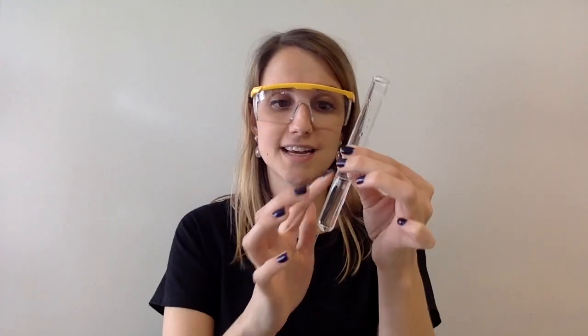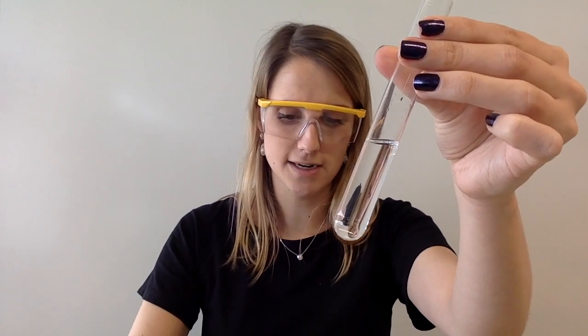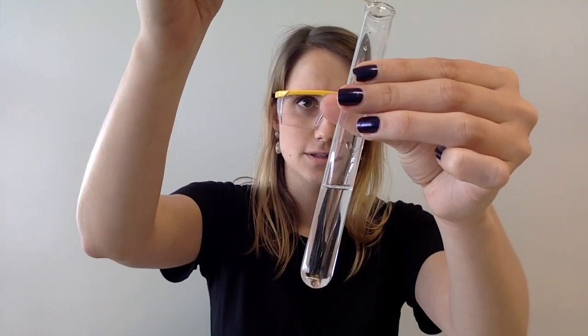So the actual test itself involves testing sulfate ions using barium ions, and normally we use barium chloride as our reagent. So let's watch what happens when I add the barium chloride to my sulfate ions.